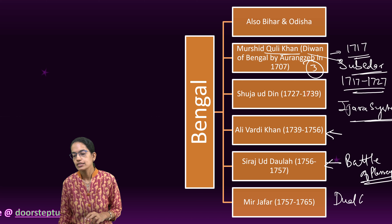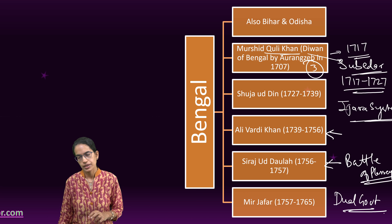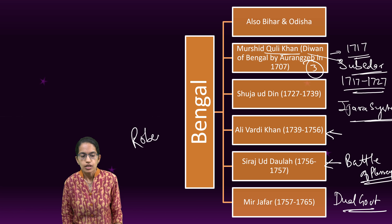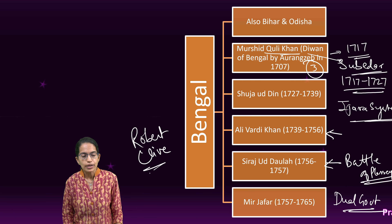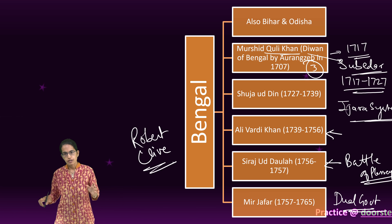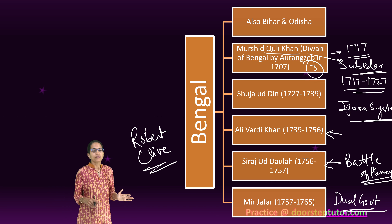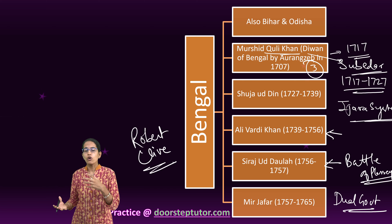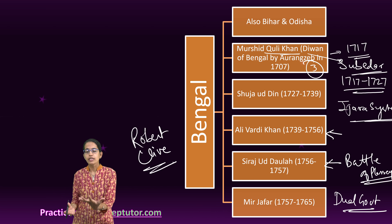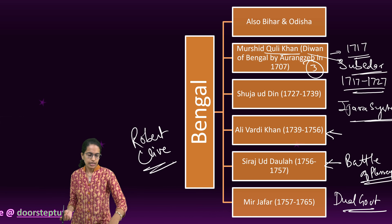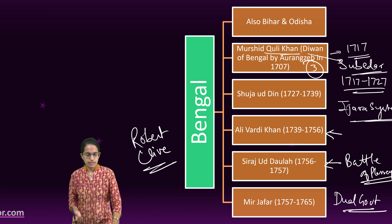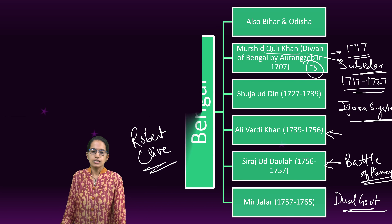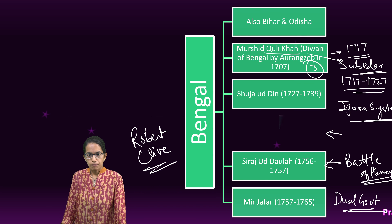They started the concept of dual government in Bengal, and this was by the efforts of Robert Clive. By the efforts of Robert Clive, a dual government system in Bengal started and the rule of the leaders of Bengal state came to an end. Finally, the English government established their stake.